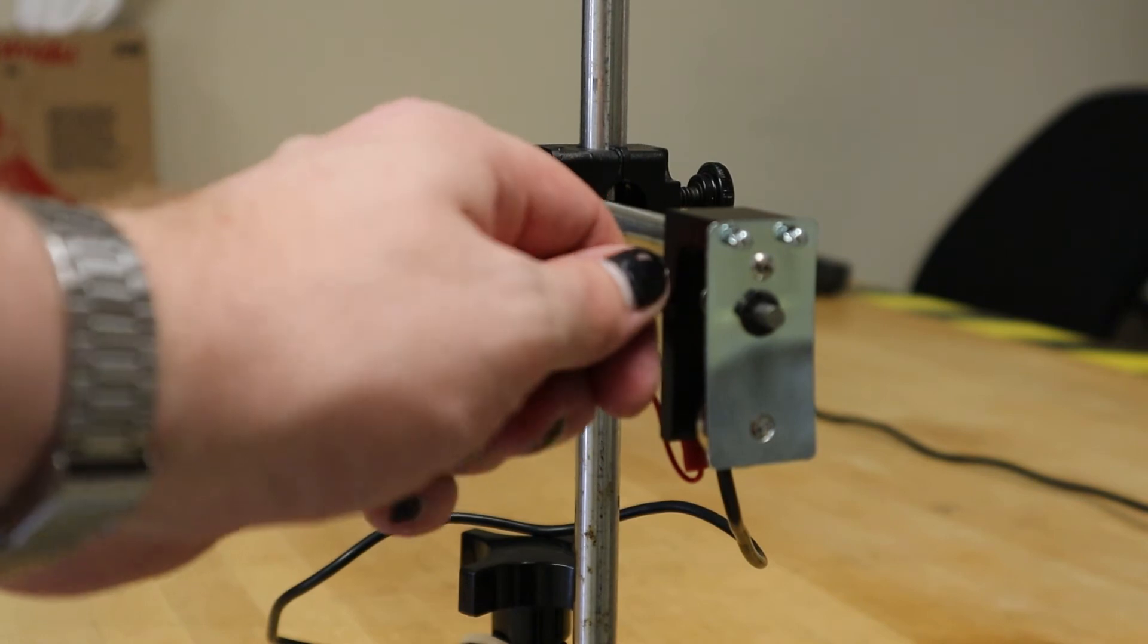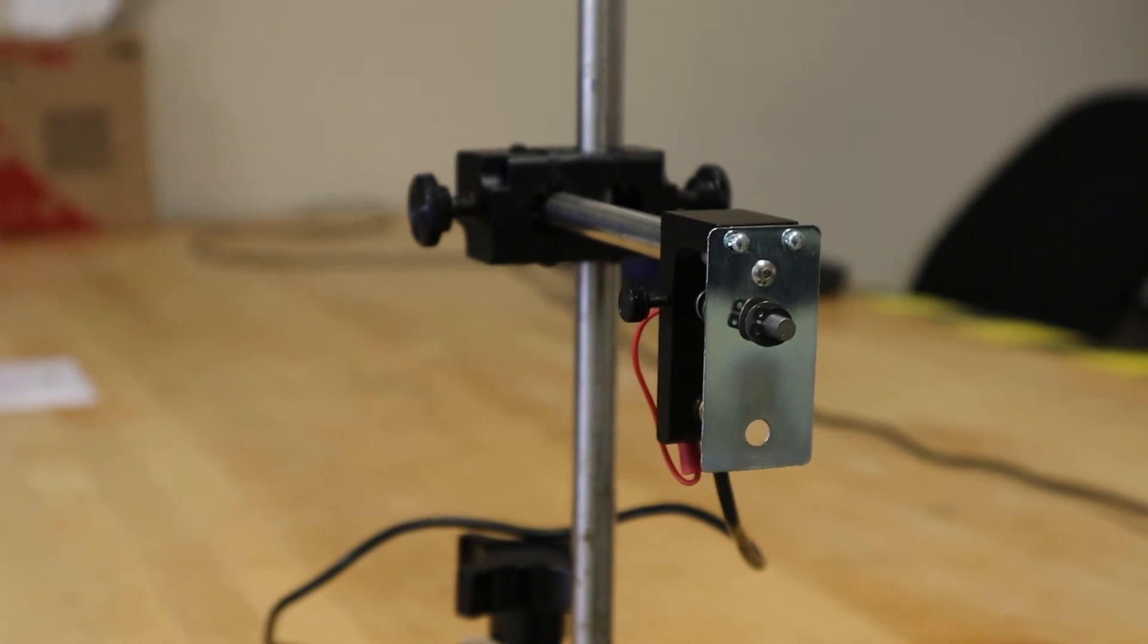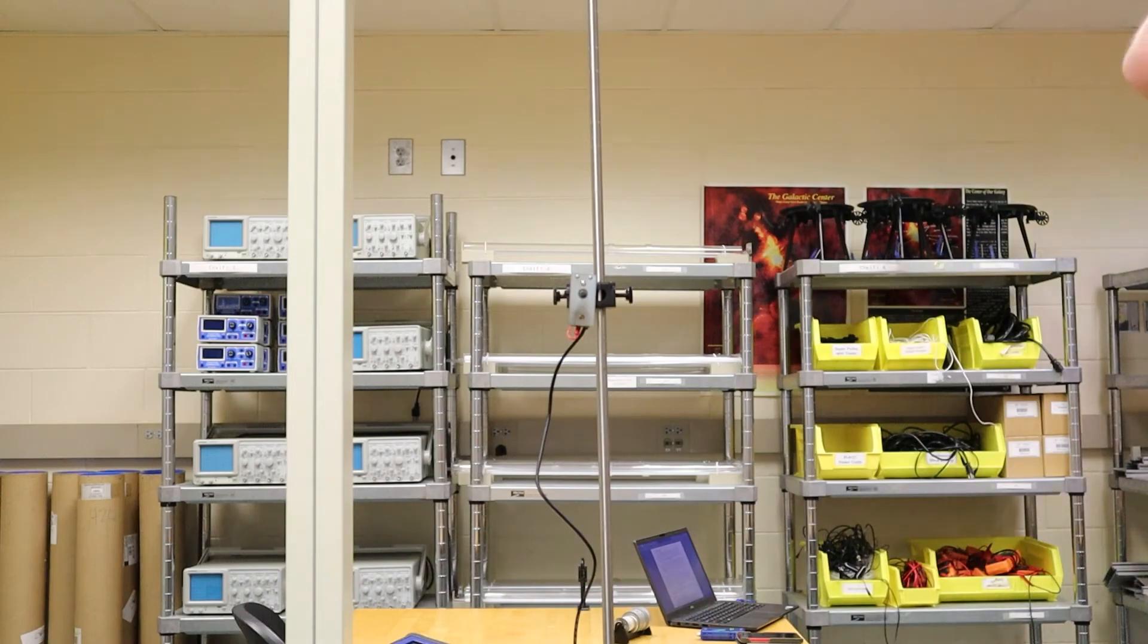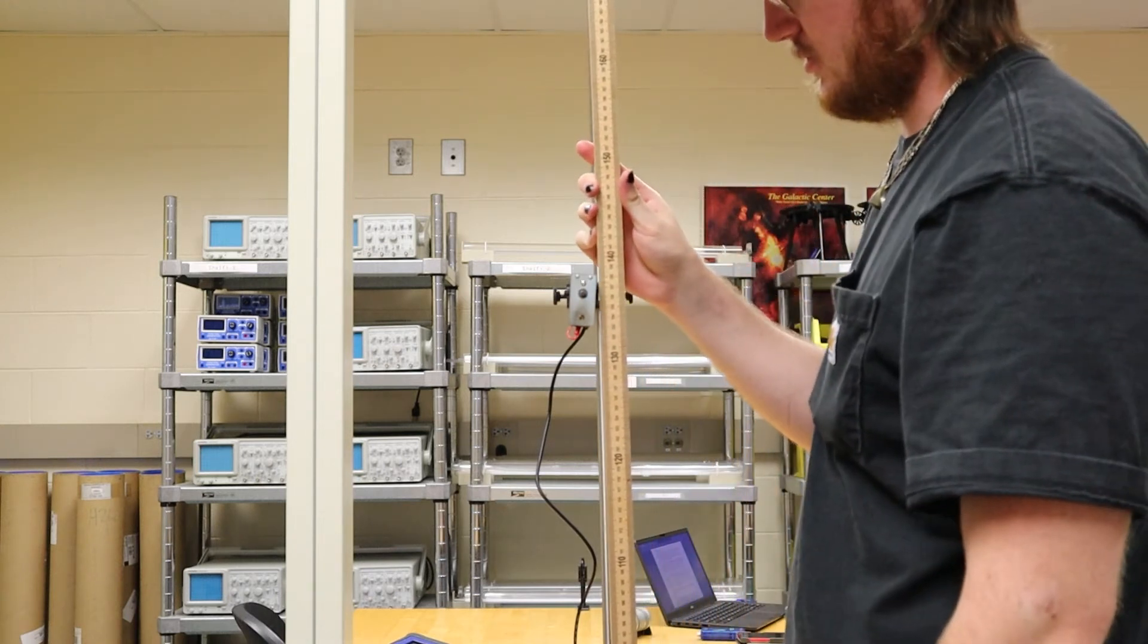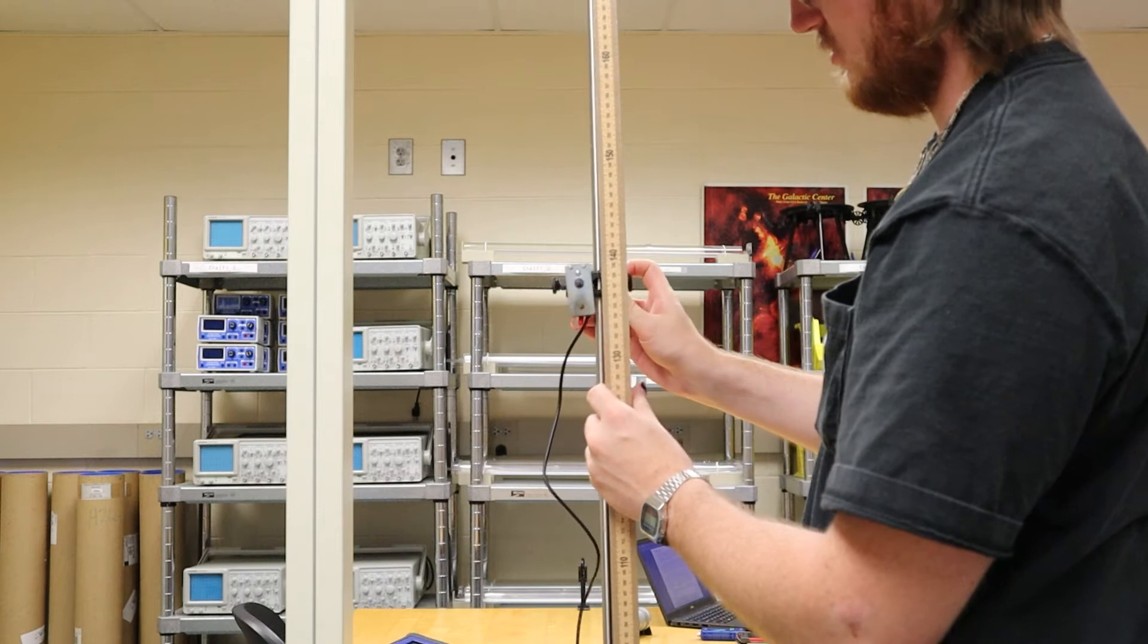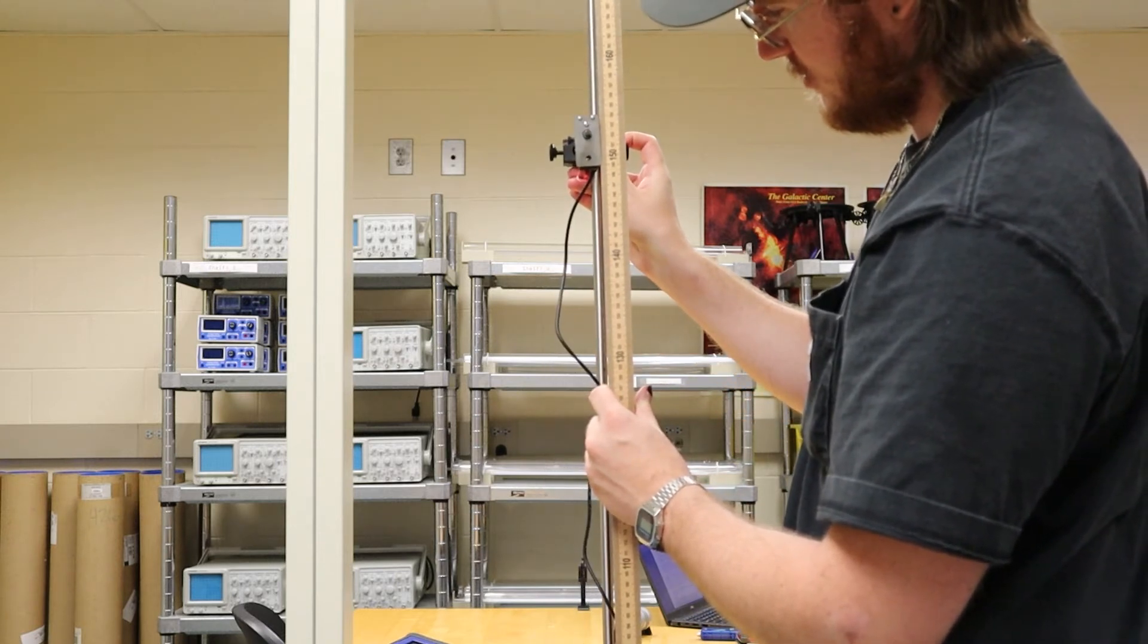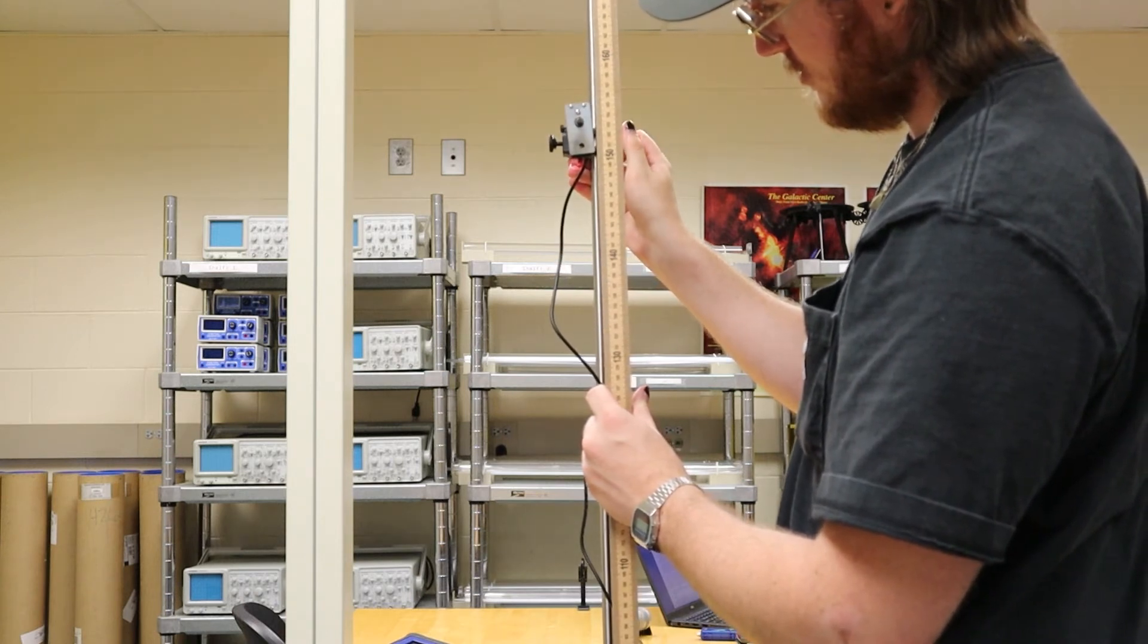To release the ball, loosen the thumb screw and the ball will fall onto the pedal. Now we will set up for Procedure A. For Procedure A, we want the ball holder at a height of 1.5 meters above the pedal. To do this, loosen the set screw on the mounting hardware and adjust the ball holder so the bottom of the metal sheet is at the 150-centimeter mark.